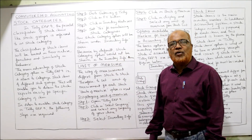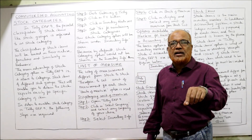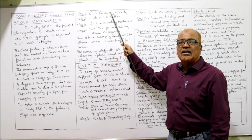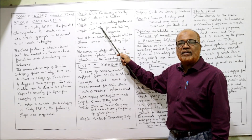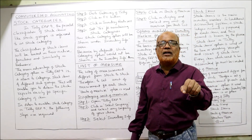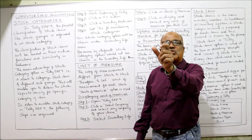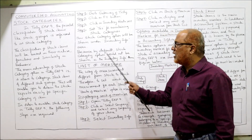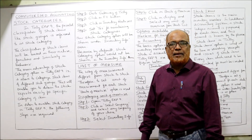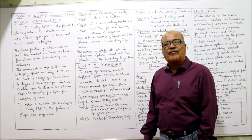To enable stock category, follow these steps: go to Gateway of Tally, press F11, select Inventory Features, and set Yes for maintaining stock category. Once you press Yes, stock category will automatically appear under Inventory Info. That is the explanation regarding stock category. The next topic is Units of Measure, which is also an important part of inventory masters.